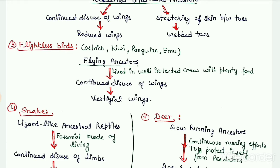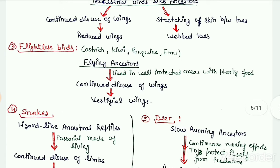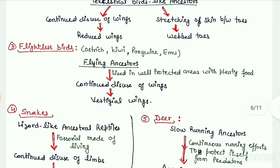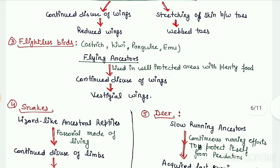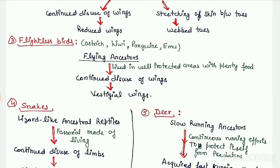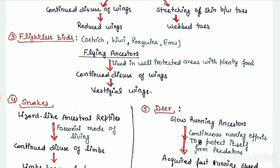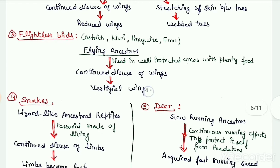Other evidences supporting Lamarckism include the presence of vestigial wings in flightless birds like ostrich, kiwi, and penguin. These flightless birds evolved from ancestors that could fly, but because their ancestors began living in well-protected areas with plenty of food, they had little need for flight. They continuously disused their wings, due to which the wings became vestigial. Vestigial organs are those that are present in the organism but are non-functional.